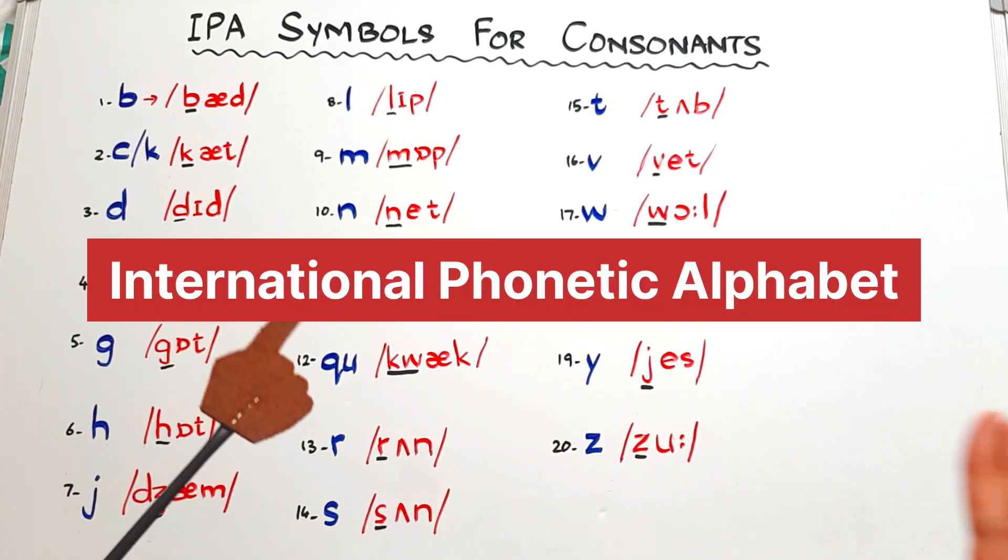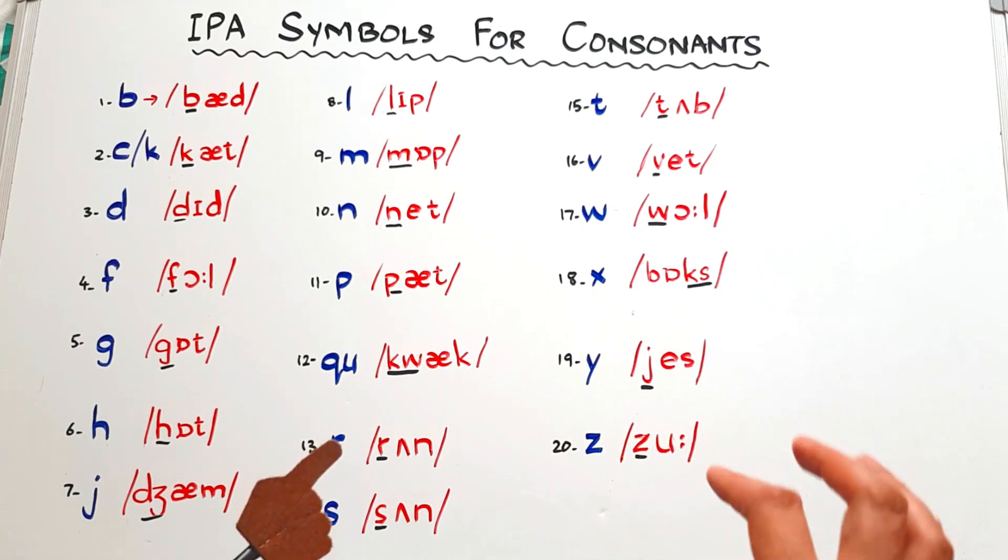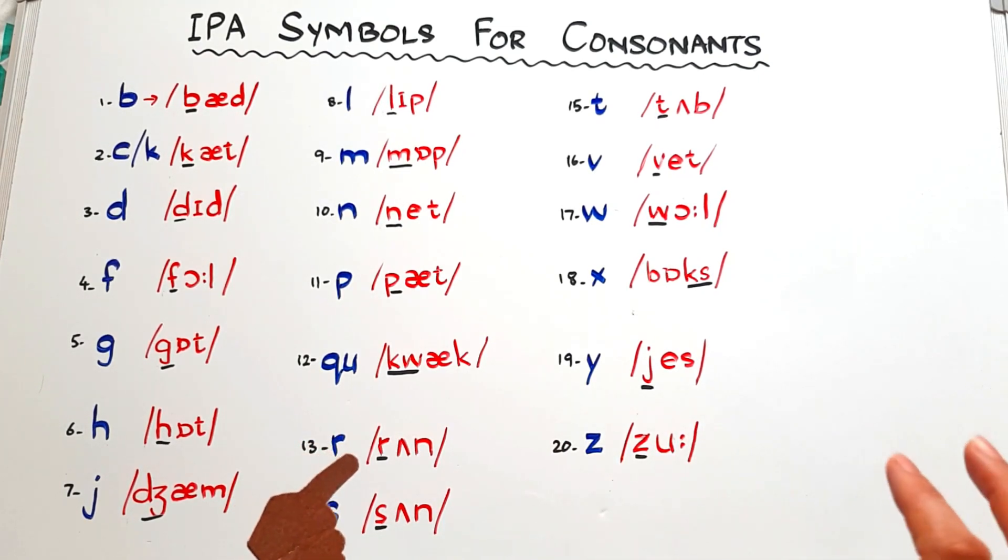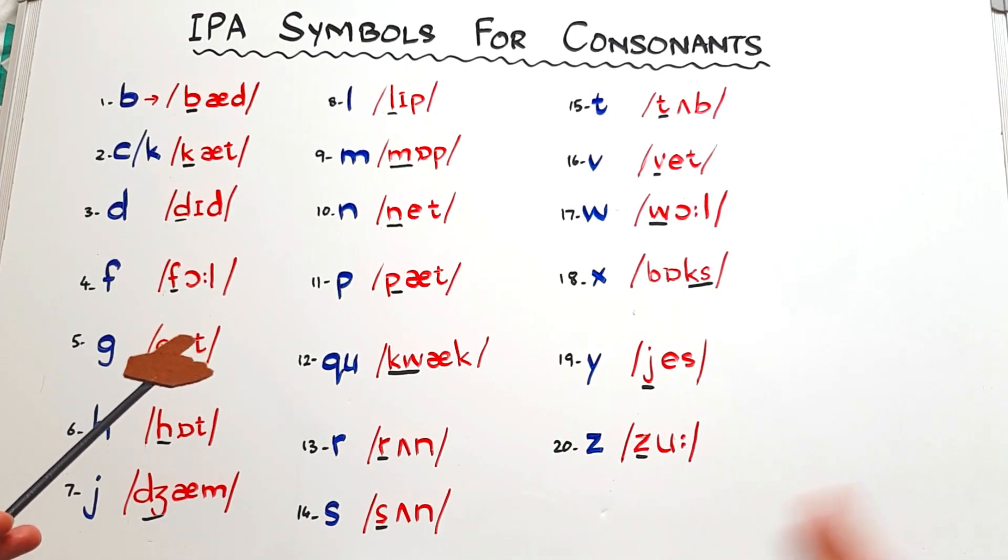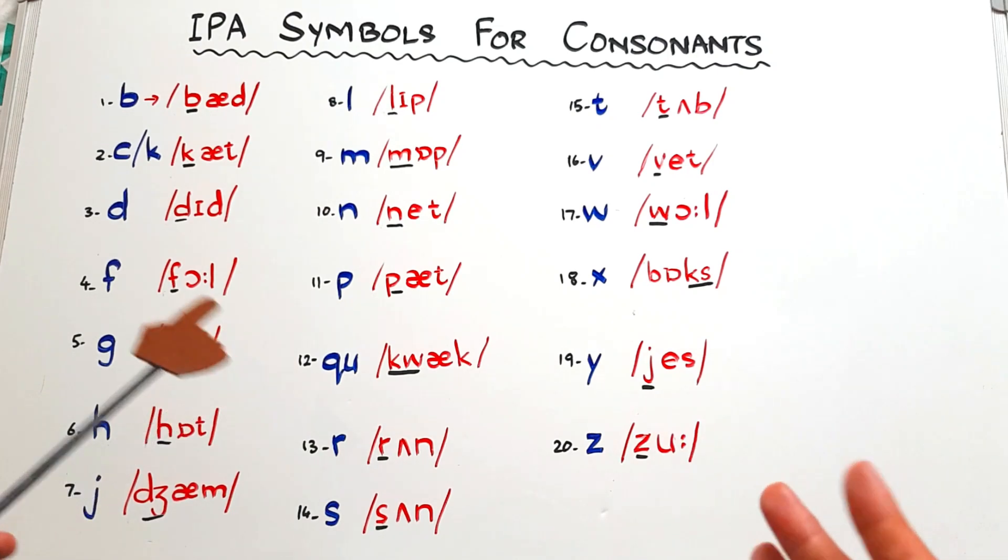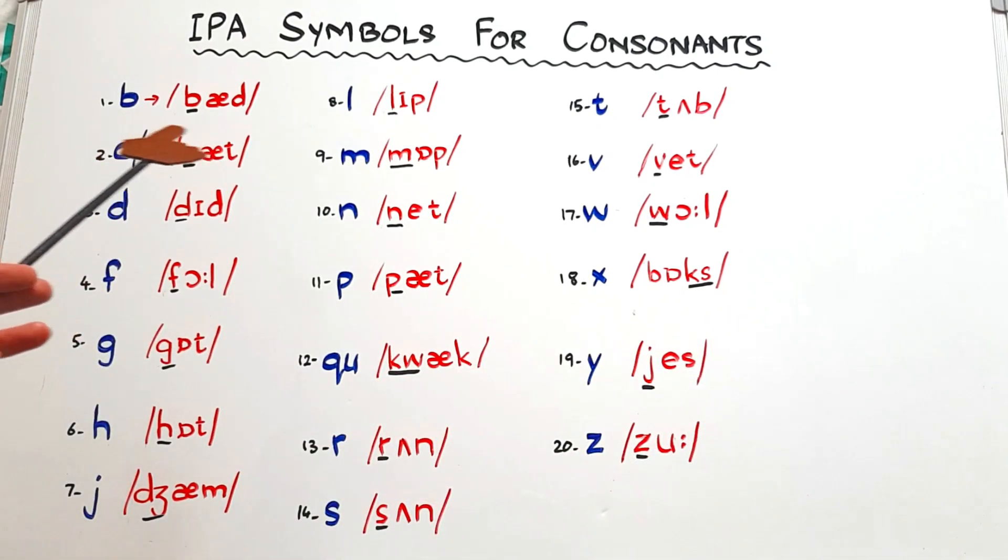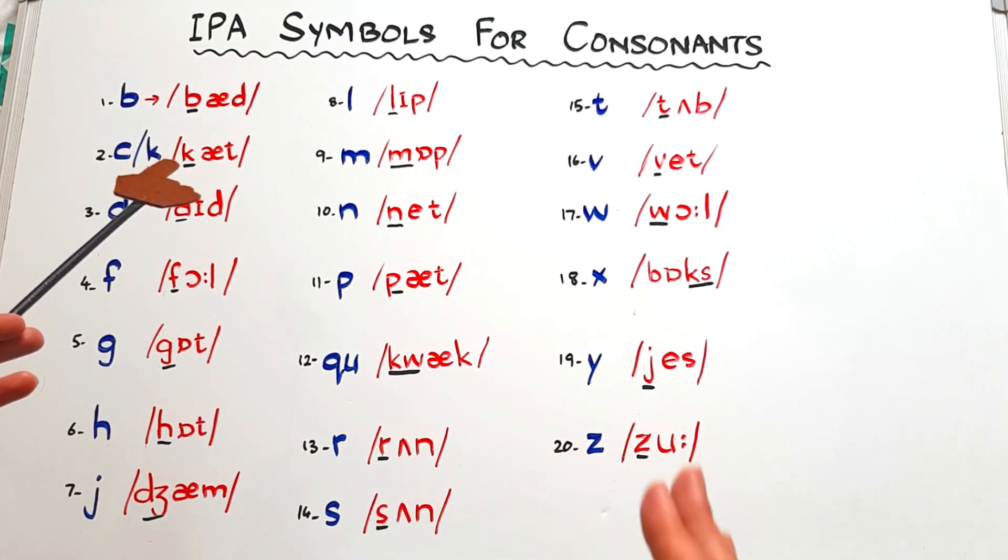IPA means International Phonetic Symbols. We need IPA symbols to read the correct pronunciation of words. You must have seen this type of transcript written in dictionaries. Whenever you search for a word, for example if you're searching the word 'bad', beside 'bad' you find something written like this. So this is the IPA transcript - International Phonetic Transcript.